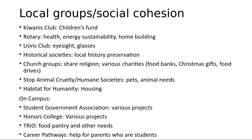On campus, we have the Student Government Association, which creates various projects throughout the year. The Honors College takes on a project each year, raises money for it, and makes a donation with whatever the project proceeds bring in. TRIO offers a food pantry and other needs for students who might need assistance. Career Pathways offers help for parents who are students. Community involvement doesn't have to just be in the broader community — it can be in your campus community as well.